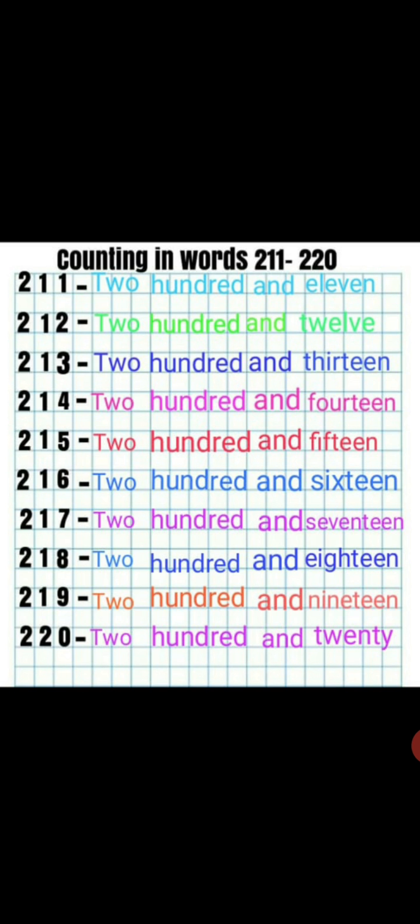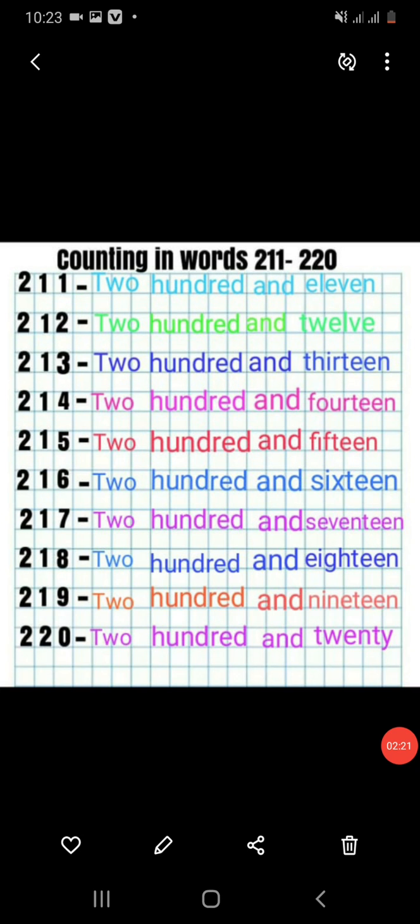Now we will start our workbook. Here you will write counting in words. First you will write the number 211. The first number tells us how many hundreds we have. You can see 2 is in the hundreds place, and then we have the tens digit and then the ones digit. The first digit is 2, it means we have two hundreds, and the next number is 11. So we will call it 211.